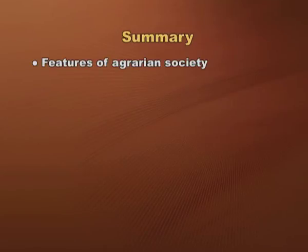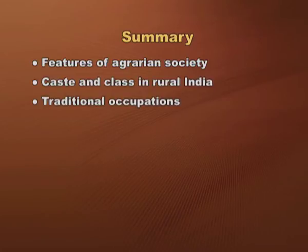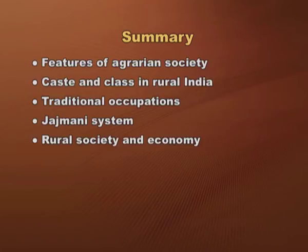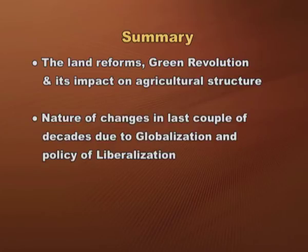In this chapter, we attempted to learn about change and development in rural India. We discussed the features of rural society, caste and class in rural India, traditional occupations, the jajmani system, rural society and economy, types of land and new systems, land reforms, the green revolution and its impact on agrarian structure, and finally, the nature of changes in the last couple of decades due to globalisation and the policy of liberalisation. This is all about the change and development of rural society in India. Thank you.